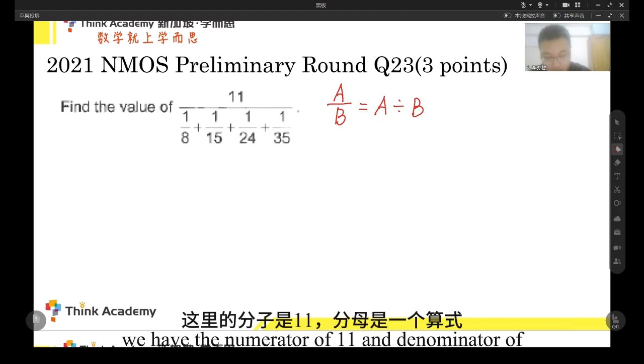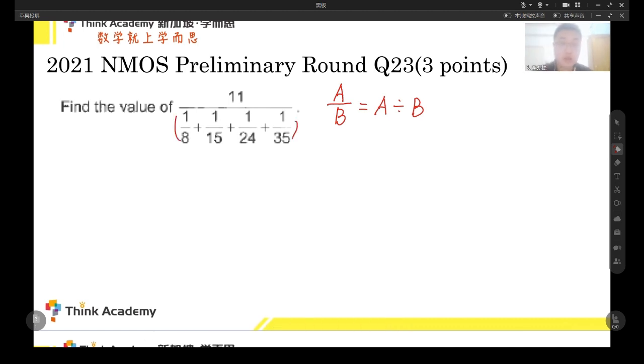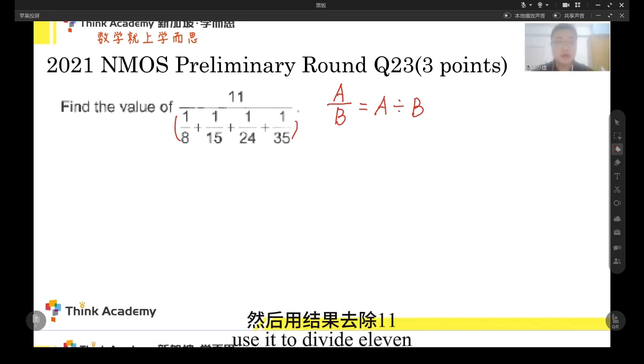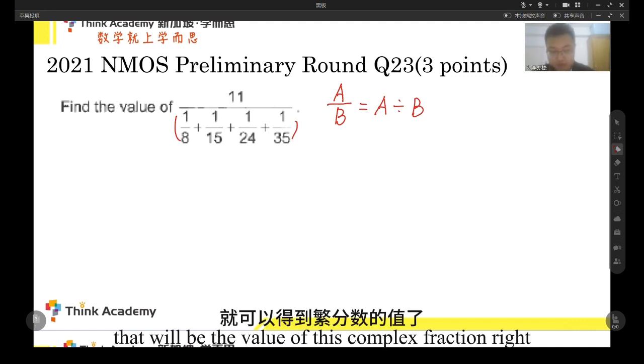We have the numerator of 11 and denominator of a formula. So maybe we can just calculate the formula on the denominator, then use it to divide 11. That will be the value of this complex fraction, right?